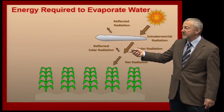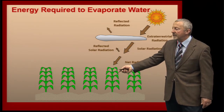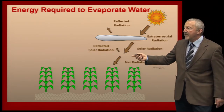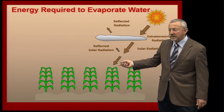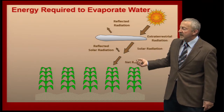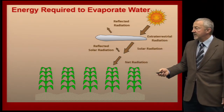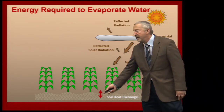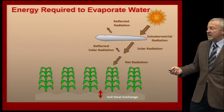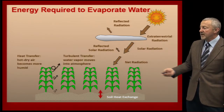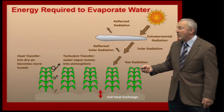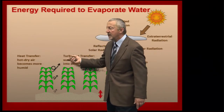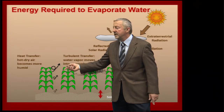Once we get close to the Earth's surface, some of that energy is reflected right off the plant leaves and goes back out as reflected solar radiation. What remains to cause our plants to transpire and grow is the net radiation — how much energy is actually absorbed by the plant. There's also some heat exchange that goes on, more so during the early portion of the growing season than later on when the crop canopy completely covers the soil. Hot, dry air can also move water vapor away from the plant materials.